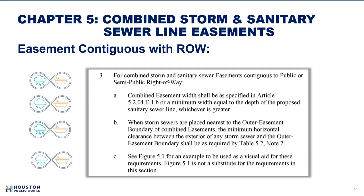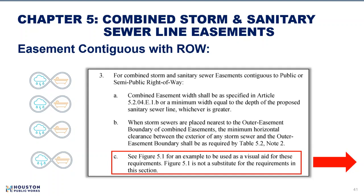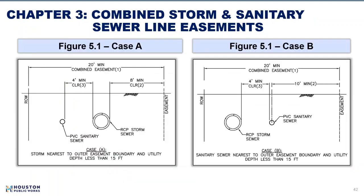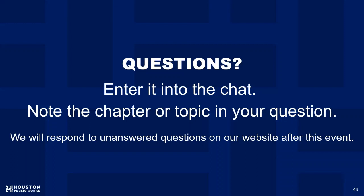The standard review committee added a figure to the IDM to help with clarity, shown on the next slide. Both cases in Figure 5.1 have utilities at a depth less than 15 feet. Case A is where the storm sewer is nearest to the outer easement boundary, and Case B is where the sanitary sewer is closest to the outer easement boundary. In both cases, the 10-foot distance between the outer easement boundary and the sanitary sewer line is maintained, and the minimum 8-foot clearance between the storm pipe and the outer easement boundary is maintained. That concludes this part of the presentation; please type questions into the chat.